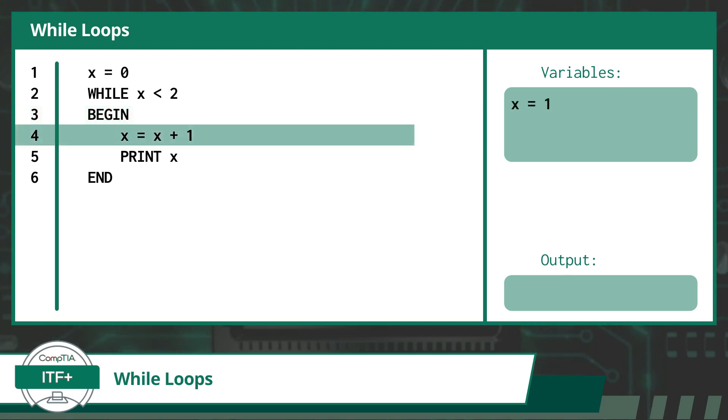On line 4, we will reassign the variable x with the current value of x plus 1. This is a very important part of the while loop. Since the condition check of the while loop is based on the value of x, if our loop does not provide a way for x to be modified in some way that will eventually cause the condition to evaluate to false, we could find our code stuck in an endless cycle, or what is referred to as an infinite loop. On line 5, our program prints out the value of variable x, which is now 1. On line 6, we have the word end to mark the end of the looped code statements. Now we head back up to line 2 and start the while loop all over again.